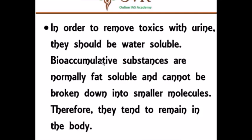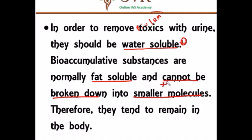For a substance to undergo Bioaccumulation or Biomagnification, if it is soluble in water, the kidney will eliminate it easily in the urine, so it cannot become a bio-accumulative or bio-magnifying substance. To become bio-accumulative or bio-magnifying, a substance should normally be fat-soluble, and it cannot be broken down into smaller products. This means it will remain in the body for a longer period of time, since fat-soluble substances are degraded slowly.